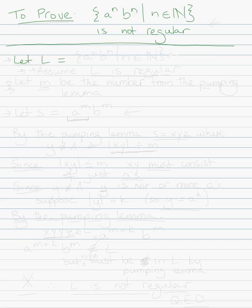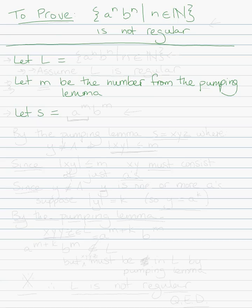We're going to let L equal my language — I'll fill that in in a minute — and we're going to say let m be the number from the pumping lemma. And then we say 'let s equal,' and we're going to pick some smart string here. You understand that in the outline we write 'let s equal' and we're going to put something here, and no matter what proof we do, we're always going to pick some smart string.